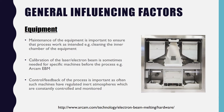Under equipment, there are three main points. Firstly, maintenance of the equipment is important to ensure that the inner chamber is clean, so as to ensure purity in your part and to prevent contamination. Secondly, calibration of the laser or electron beam is sometimes needed for specific machines before the process is used, and such calibration will ensure the accuracy of your part when it's built.